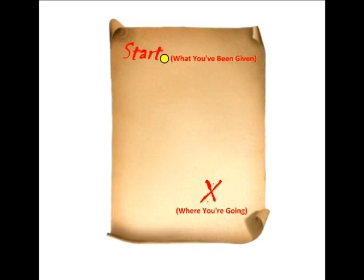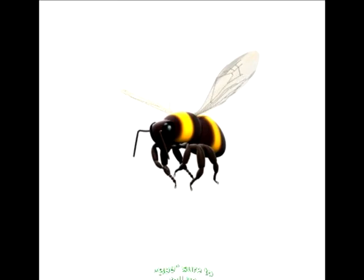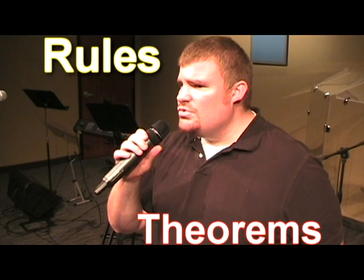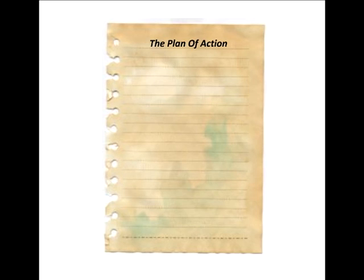Writing proofs is easy. All you do is make a plan to get to where you're going. Start with what you've been given. Be sure to tell us every single step that you will take, and then to justify every decision that you've made. You'll use the rules and theorems to explain all that you do as you write the plan of action.